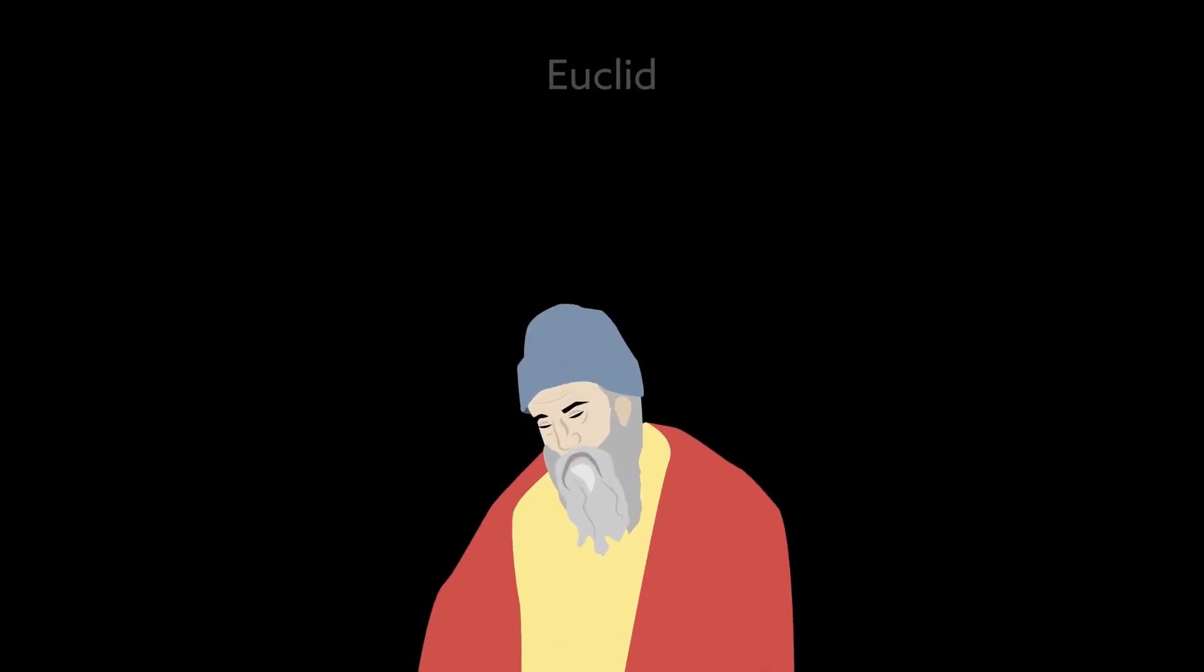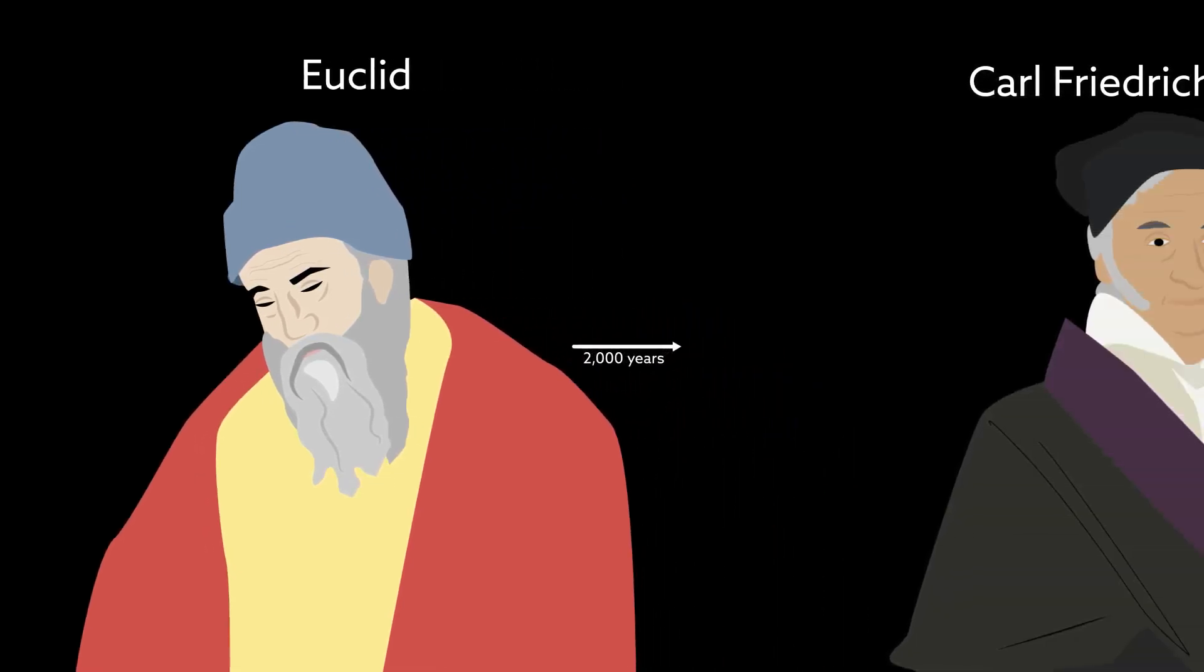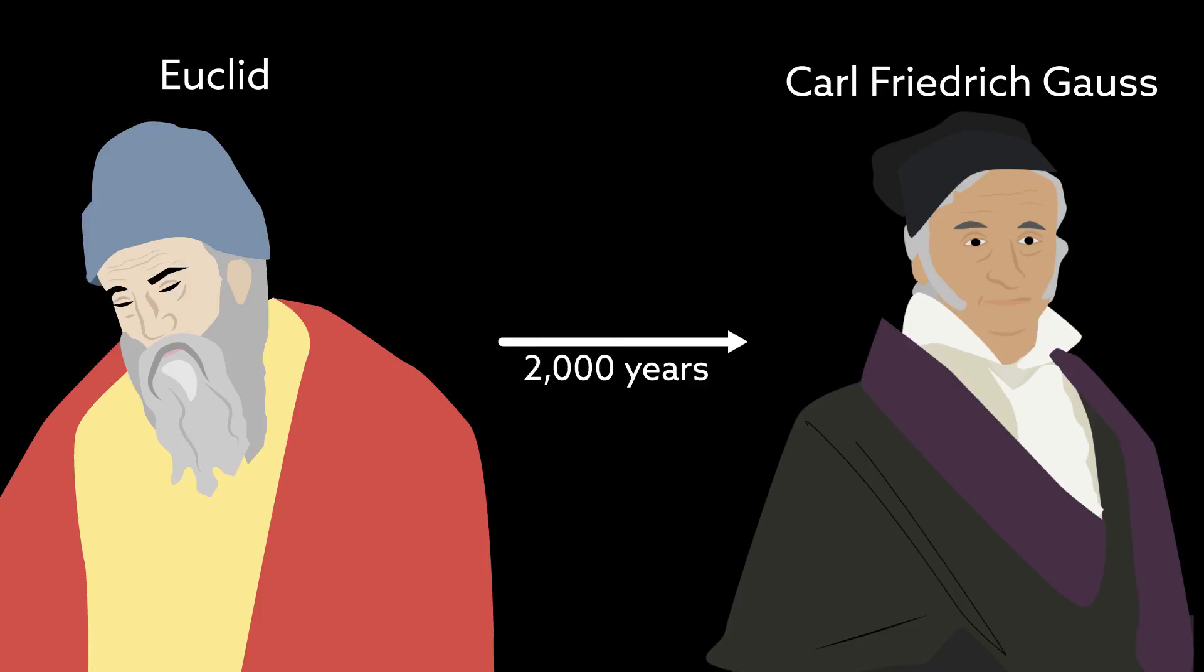In ancient Greece, Euclid proved that there are infinitely many such numbers. More than 2,000 years later, Carl Friedrich Gauss became the first to find a pattern in their distribution.